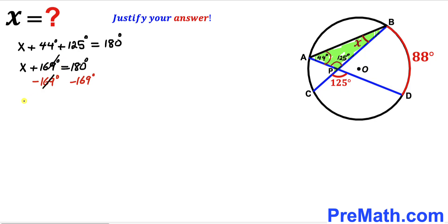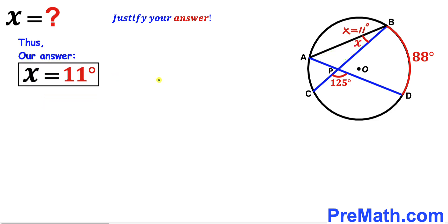Subtracting 169 from both sides, the 169 cancels. Therefore our angle x turns out to be 11 degrees. So for this given diagram, angle x equals 11 degrees. That's our final answer for this diagram.